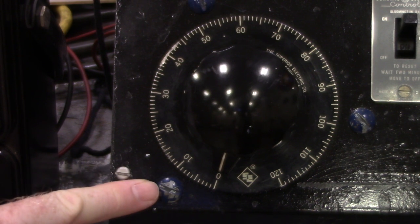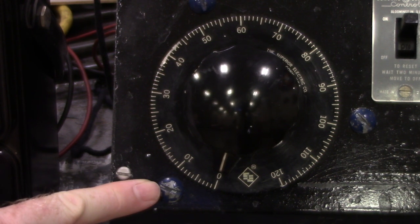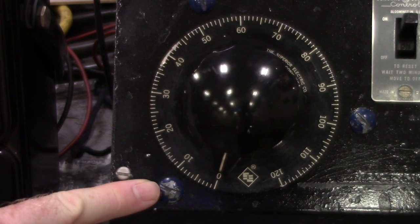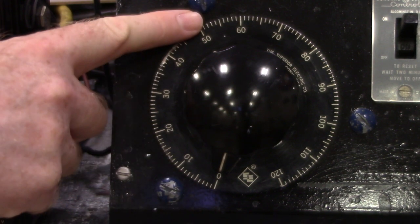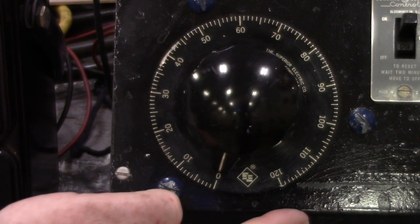The numbers on the dial are not percentages. Assuming that you have 120 volts in, these are the voltage that you'll get out from 0 to 120.